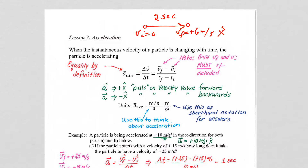We're going to see that acceleration, in terms of a mathematical definition and its application in physics, has a little bit more to it than that, though speeding up is still part of our understanding. So let's take a look at our mathematical definition. Mathematically, acceleration is equal, by definition, to the change in velocity divided by the change in time. Please get this part into your notes — this is really important.